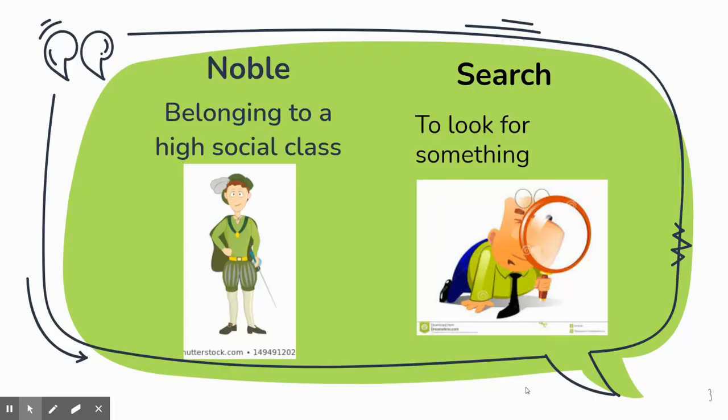Noble means belonging to a high social class. I have somebody here that looks like a lord, a duke, or maybe even a prince. Search means to look for something. The magnifying glass shows that somebody's looking for something tiny, maybe on the floor.